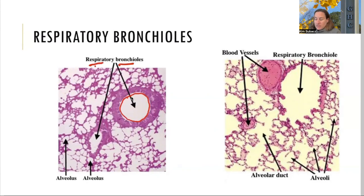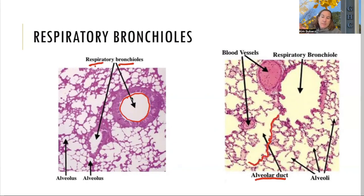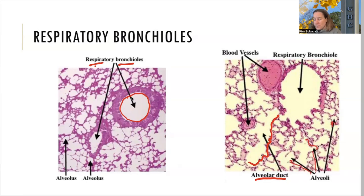Our respiratory bronchioles are going to feed into the alveolar sacs, and those are connected with alveolar ducts right here. These larger open areas are the alveolar ducts. We also have blood vessels running through here because we're going to have capillary beds surrounding the alveolar sacs where gas exchange is going to happen. Here's an alveolar sac — here's one, here's another one — we've got them all over in this slide.